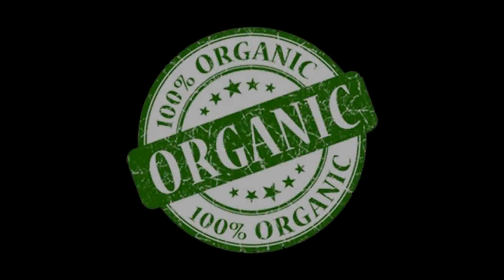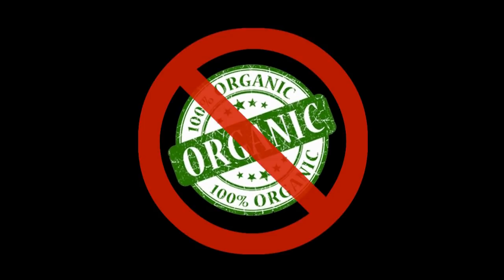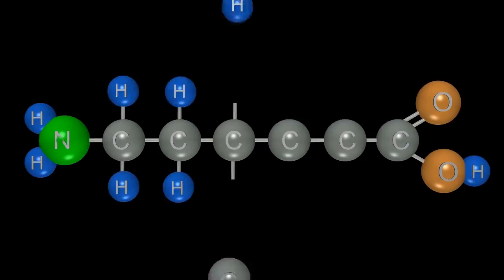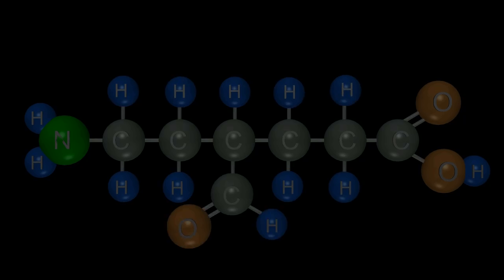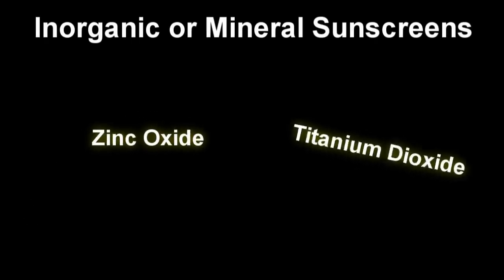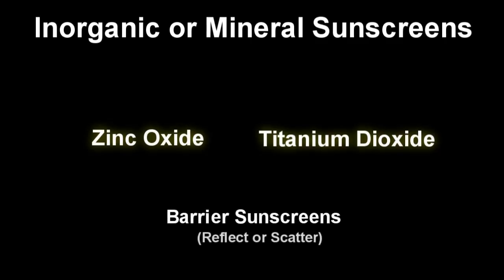A sunscreen labeled organic does not mean that it was produced without pesticides, antibiotics, or hormones like our meats, fruits, and vegetables, but that it starts with a carbon backbone on which other atoms are attached — mainly hydrogen, oxygen, nitrogen, or another carbon atom. When we apply our sunscreen, the inorganic compounds like zinc oxide and titanium dioxide are usually brightly colored and remain visible on the skin surface. These formulations are generally considered barrier sunscreens as they predominantly reflect or scatter UV light away from the skin.